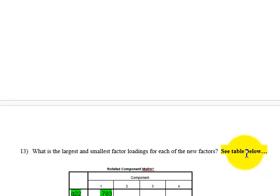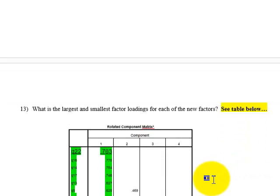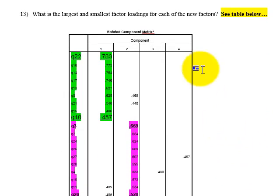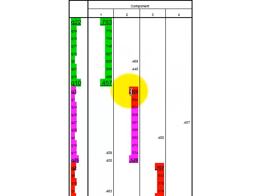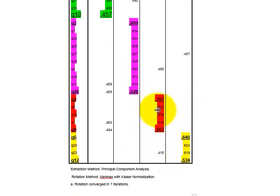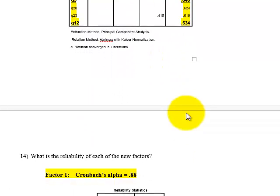Next question is, what is the largest and smallest factor loadings for each of the new factors? Again, we would use this same rotated matrix box. And it lists them in order. So the top one is the largest loading. The bottom one is the smallest loading. There's a little bit of variance here, 0.78 versus 0.545. A lot of spread there. Not a lot of spread in the second one, 0.68 to 0.52. The spread is kind of, it's not bad. So that's how these things are loading up.